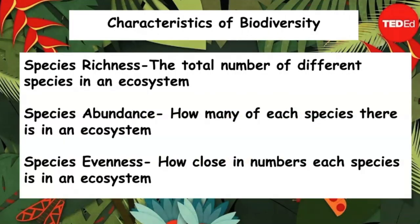Some scientific terms we use to talk about biodiversity are listed here. Species richness is the total number of different species — that could be an aspen tree, a rosebush, some grass. Species abundance is how many of each of those species there are.